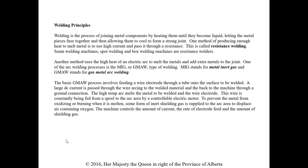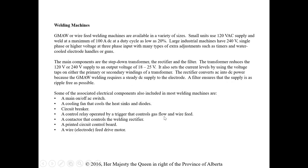The next part of the module covers welders in general — it's a good read if you don't know much about them. It discusses resistance welding, metal inert gas welding, and gas metal arc welding. These machines need a nice smooth DC output, so they use filtration to get the output as ripple-free as possible. Welder inputs can be 120 V or 240 V. The duty cycle — for example at 20% — will come into play for code calculations. The main components are transformers, rectifiers, and filters.